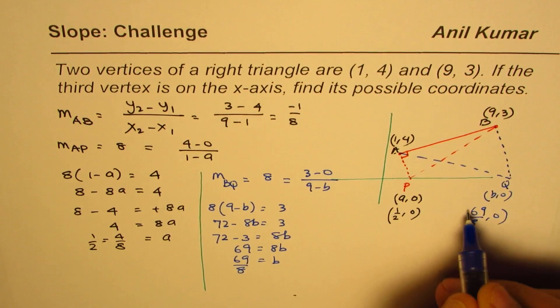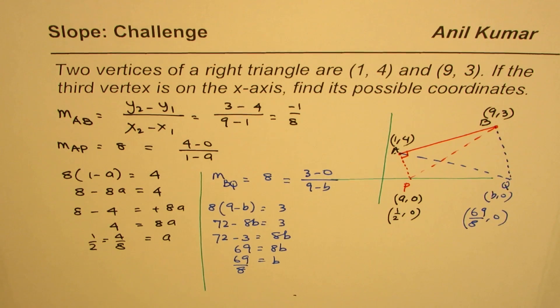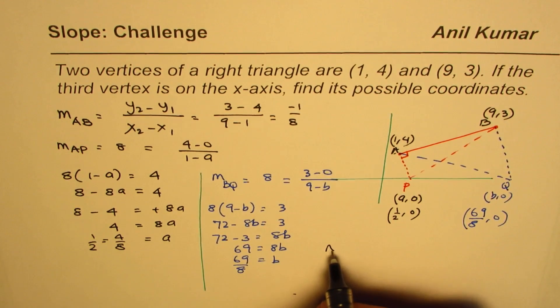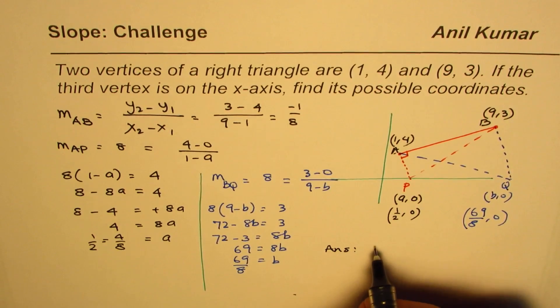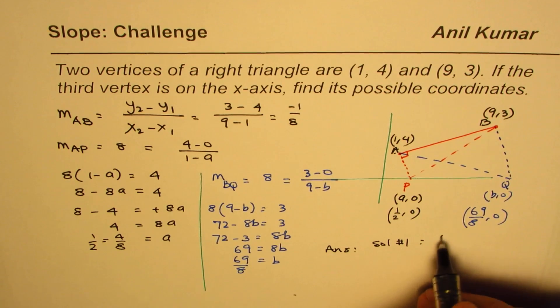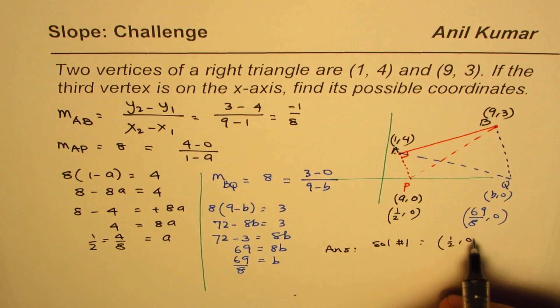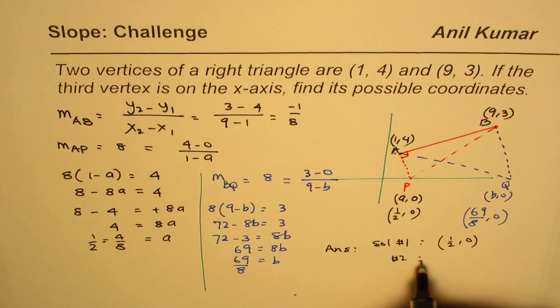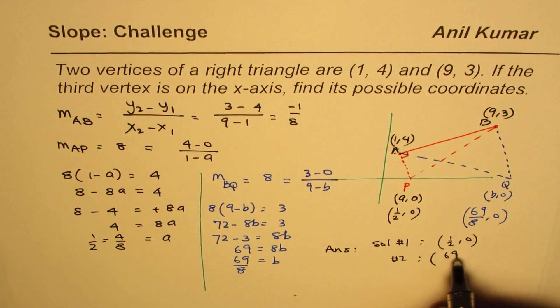So there are two possible solutions. We can write down our answer as: Solution 1, coordinates are (1/2, 0), and Solution number 2, it could be (69/8, 0).